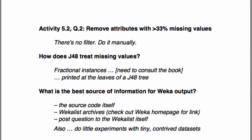Another question: what's the best source of information for Weka output, for the output of classifiers? Peter suggested you could always look at the source code — that's the definitive way of knowing what's going on. You could check the Weka list archives; there's a link on the Weka homepage. Or you could post a question to the Weka list. To those three, I would add a fourth way: do little experiments. Come up with a small, contrived data set, apply the method, and look at the output when you know what it's supposed to be. I'm a great believer in doing little experiments to learn things. Now you've got Weka, you can create data sets and do experiments.